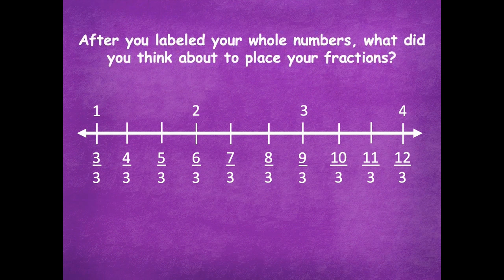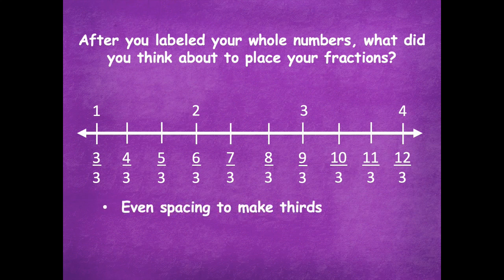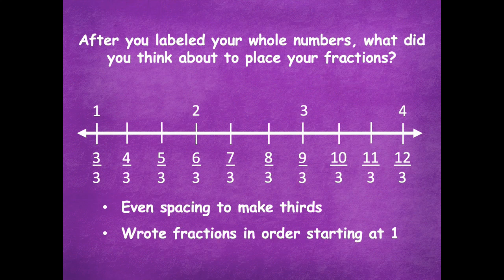After you labeled your whole numbers, what did you think about to place your fractions? You had to use even spacing to make those thirds — you can't have a third right close to the one and then have a big gap. You want them to be all about the same. And then we wrote the fractions in order starting at one, beginning with three thirds because that represents one whole.